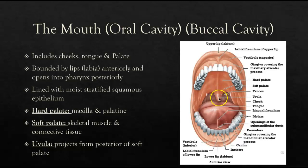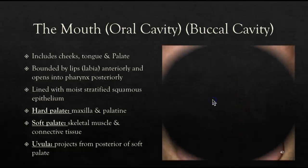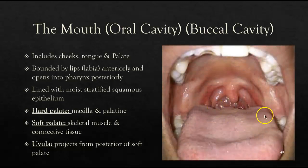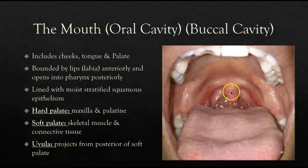The uvula swings back to protect the nasopharynx from food and fluid, ensuring that it moves down into the oropharynx. Here is an actual oral cavity showing the hard palate, soft palate, and the uvula.